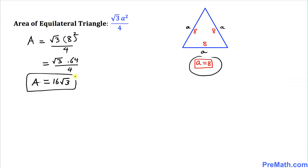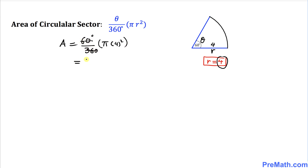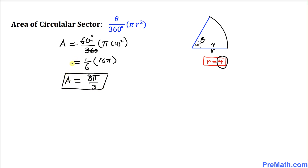Now let's calculate the area of the circular sector where θ = 60 degrees. Filling in the formula: (60 / 360) × π × 4² = (1/6) × 16π = 8π/3. So the area of the circular sector is 8π/3.